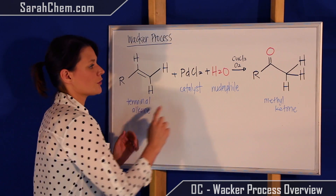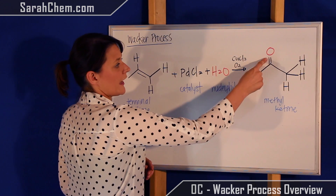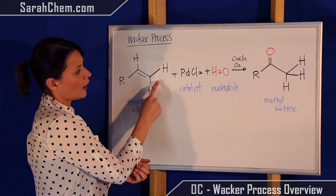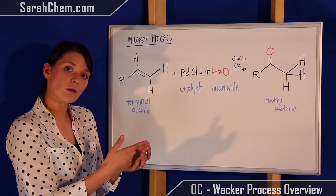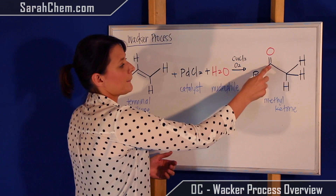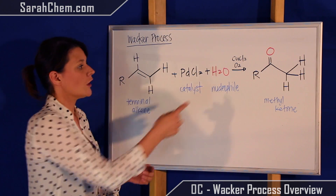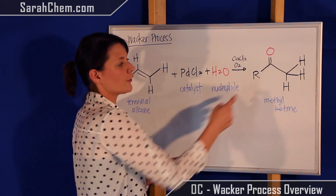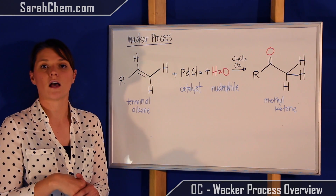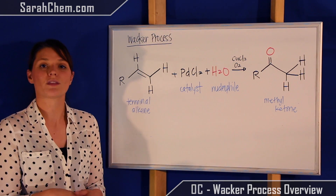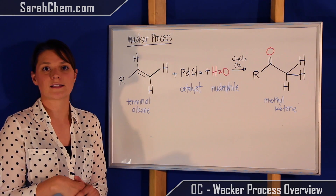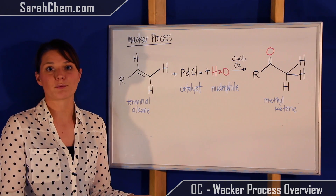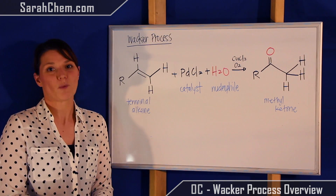Over here I've removed the double bond and created the carbonyl. Remember, the carbonyl is not going to happen on the terminal carbon — it happens on the carbon right before it. On that carbon we add our carbonyl, and on the other carbon we just replace that missing double bond with an H so everything has a full octet. That's all you really have to know in order to predict products for the Wacker process.